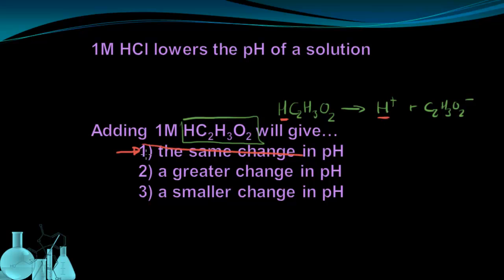But as it turns out, we don't see the same change in pH. And what we actually see is that the acetic acid gives a smaller change in pH than the HCl. But why is this? I had the same concentration of each acid. I had one molar hydrochloric acid and I had one molar acetic acid. So why am I getting different results if I have the same concentration of acid?